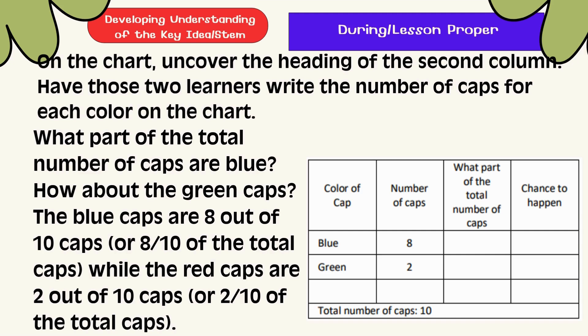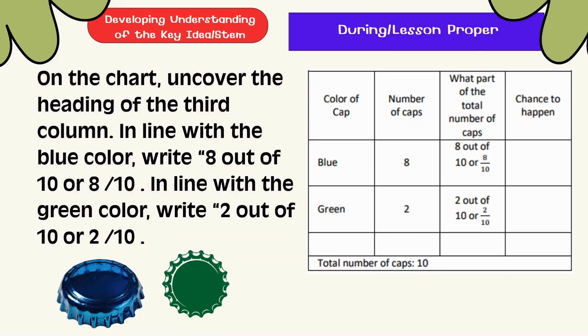On the chart, uncover the heading of the second column. Have two learners write the number of cups for each color on the chart. What part of the total number of cups are blue? How about the green cups? The blue cups are 8 out of 10 or 8 tenths of the total cups, while the green cups are 2 out of 10 or 2 tenths of the total cups. Uncover the heading of the third column. In line with the blue color, write 8 out of 10 or 8 tenths. In line with the green color, write 2 out of 10 or 2 tenths.